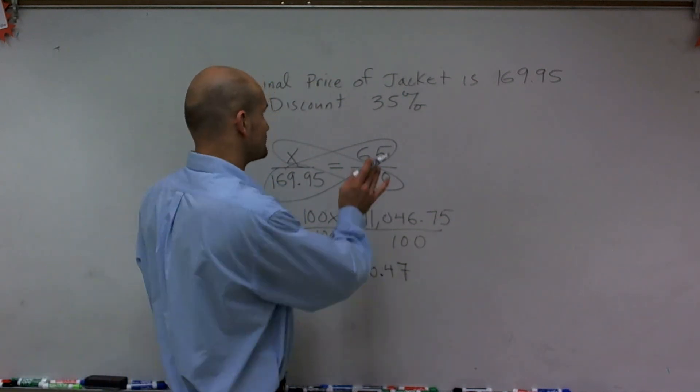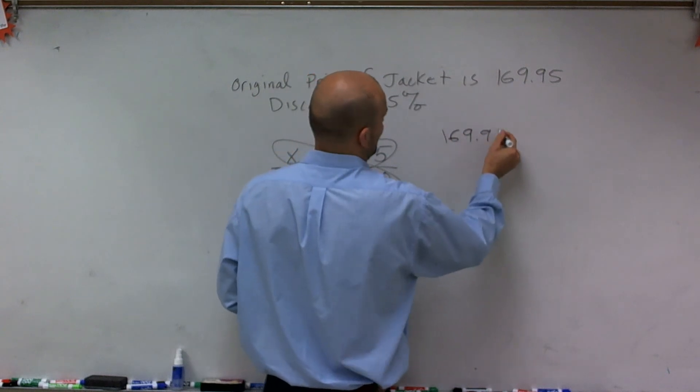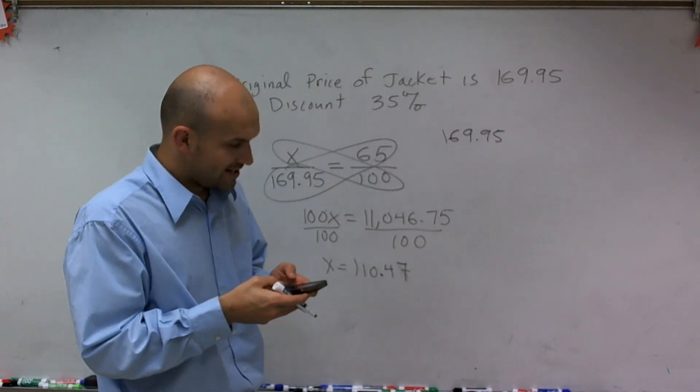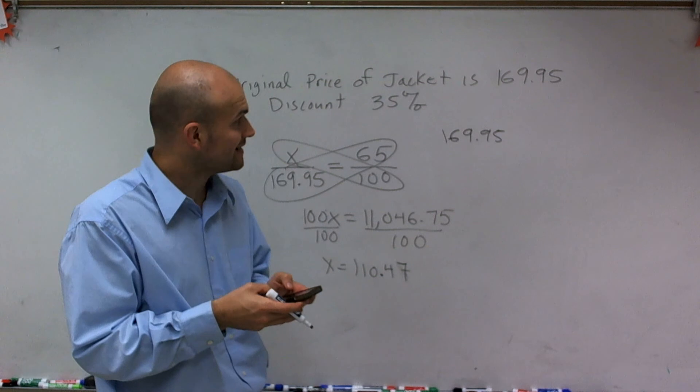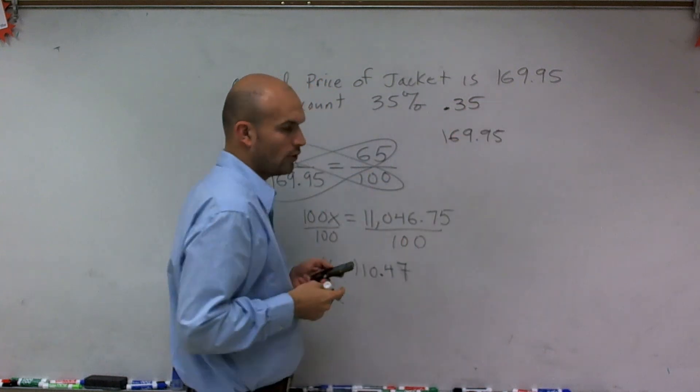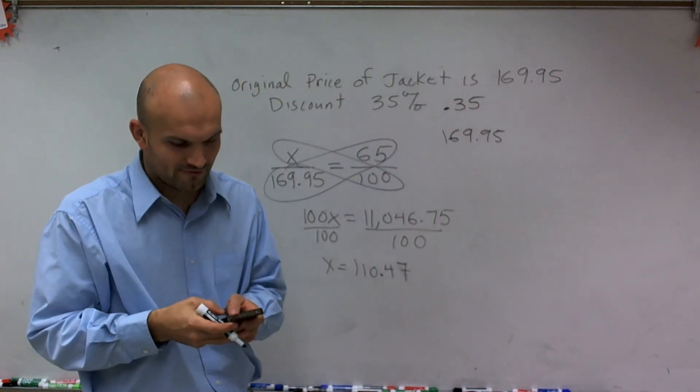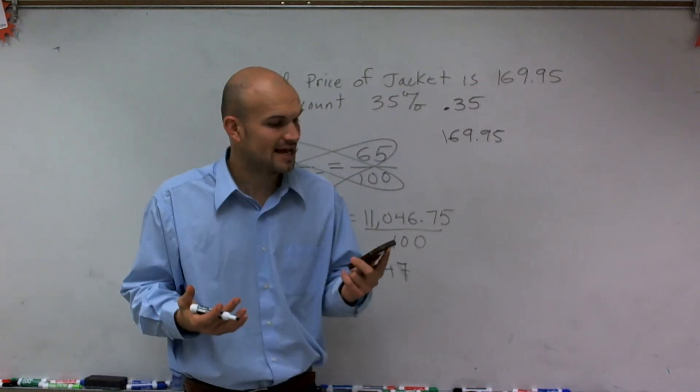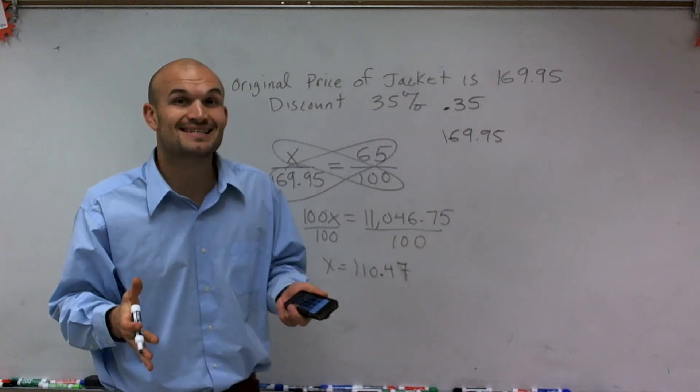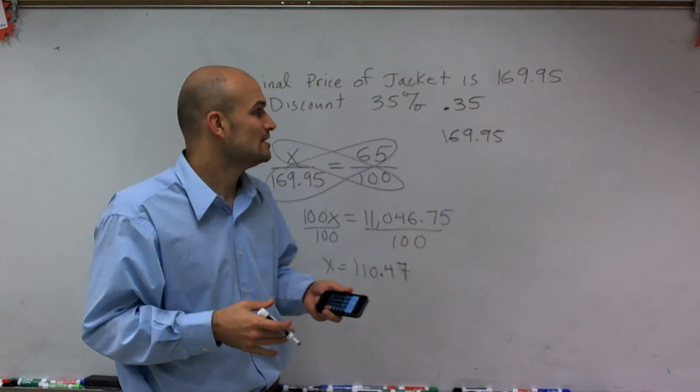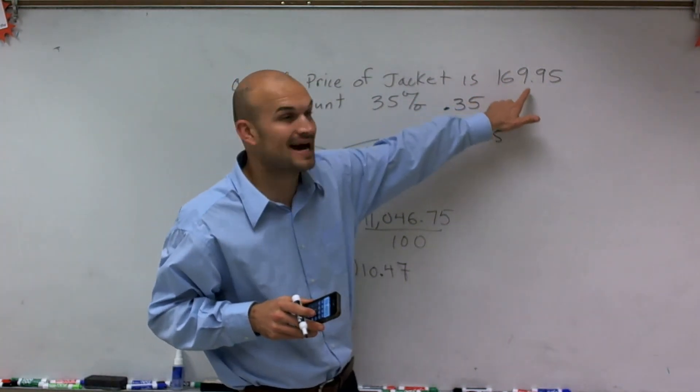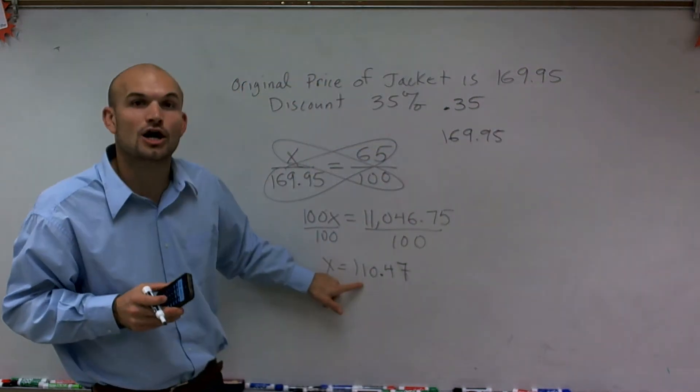Now, here's another way we can look at this. If I was going to do 169.95 and there's a discount of 35%, what you could do to find the amount discounted is take 169.95 and convert this to a decimal, which would be 0.35. So if I multiply that by 0.35, what I'm going to get is $59.48. Now, that's not the price of the jacket at a 35% discount, that's the amount that we're going to discount. So what I could do is take $59.48 and subtract it from $169.95, and I would get $110.47.